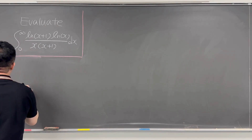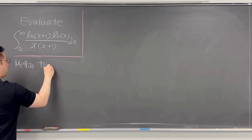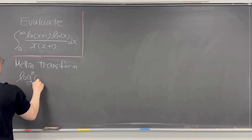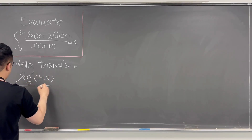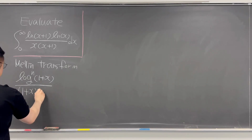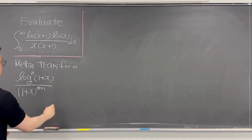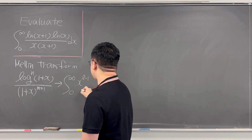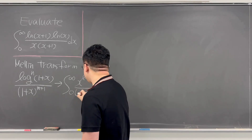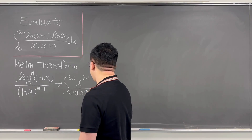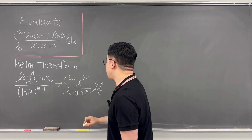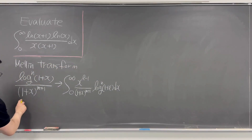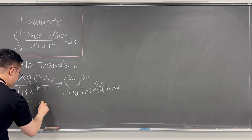For this integral, first I'll be using the Mellin transform of the form log^n of (1+x)/(1+x) to the power of m+1, in order to get the integral from zero to infinity of x^(l-1) over (1+x)^(m+1) times log^n(1+x) dx. And for our integral, we will consider when n equals 1 and m equals 0.